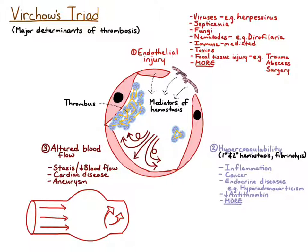So in summary, the three major determinants of thrombosis are endothelial injury, hypercoagulability, and altered blood flow.